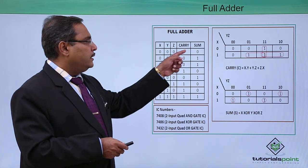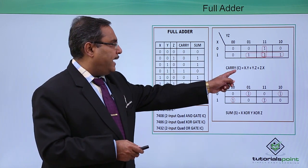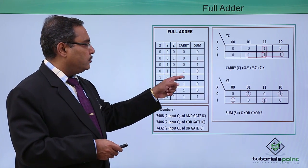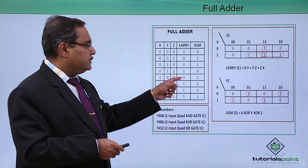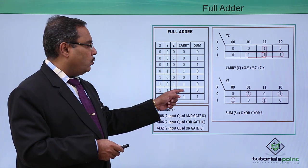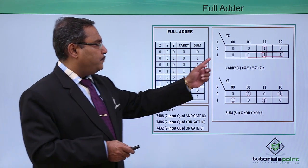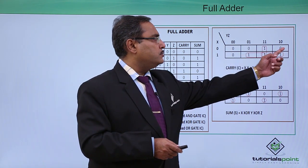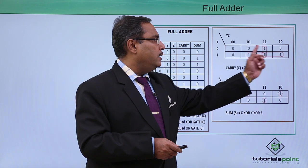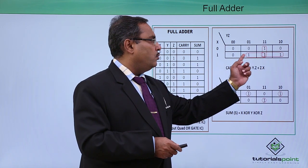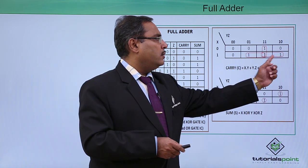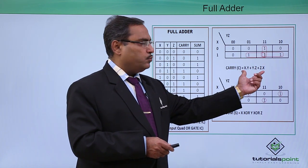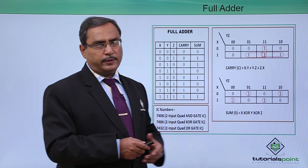Here we are plotting the carry values: 0, 0, 0, 1, 0, 1, 1, 1. We are plotting in this way: 0, 0, 0, 1 and 0, 1, 1, 1. In this way the Boolean function we have obtained is this one.